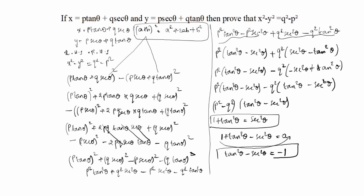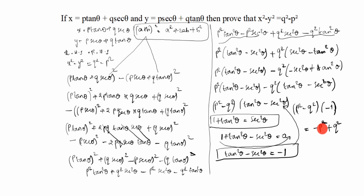So the result is q² minus p², which is exactly our RHS. Therefore, LHS = RHS, and the proof is complete.